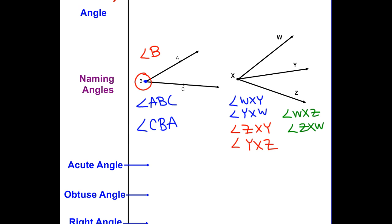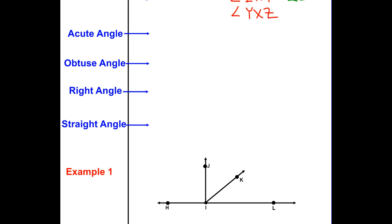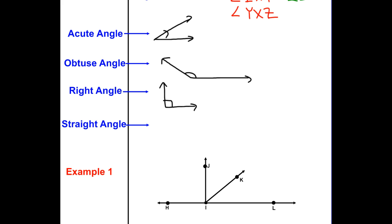The main types of angles: an acute angle is less than 90 degrees — it's so small it's adorable. An obtuse angle is greater than 90 degrees. A right angle is exactly 90 degrees, signified by a small box in the corner. A straight angle is just a straight line — it never bends.